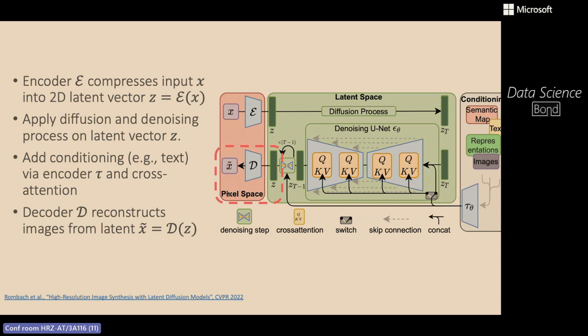The latent is the latent representation produced by the encoder — you can think of it as a downscaled version of the image. So the original image might be 512×512 and the latent is 64×64. It's just to make the process more efficient. The encoder and decoder learn to map the image, and this autoencoder is trained separately from the diffusion model. The diffusion process then operates on the latent to save time.